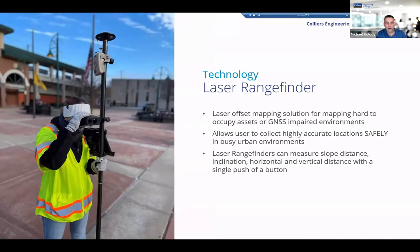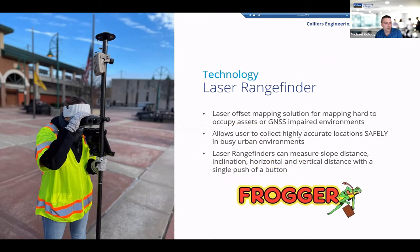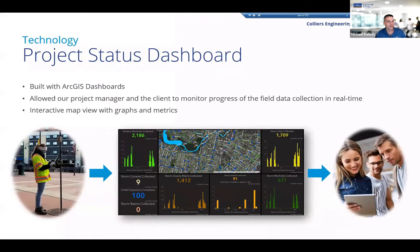The laser rangefinder I mentioned earlier is great because it allows you to accurately collect the location of assets without actually having to stand on top of them or occupy them. So if you have a manhole in a busy highway or on a steep slope, you can use the laser rangefinder to collect that location. On this project we were dealing with an eight-lane highway, and I don't want any of my field staff playing Frogger out there in the field — got to keep everybody safe.